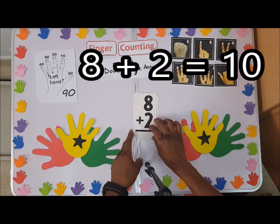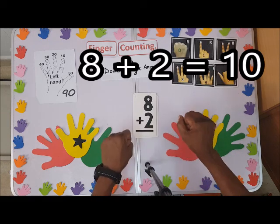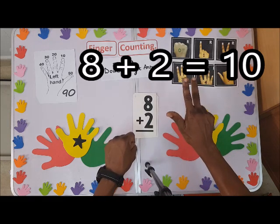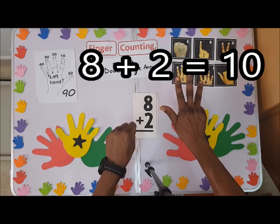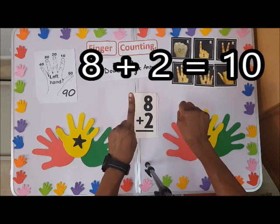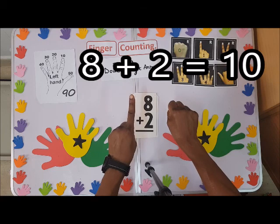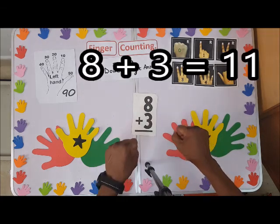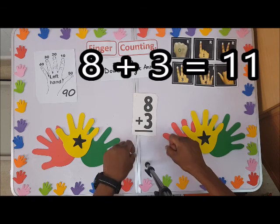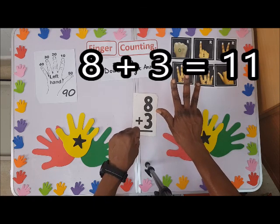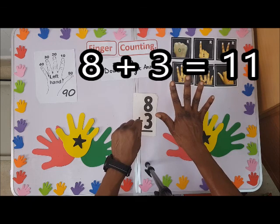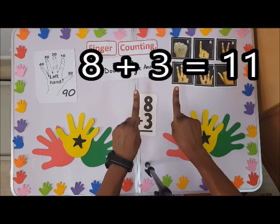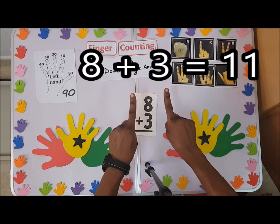Sixteen. We have eight plus three. We have eight plus three: one, two, three. The answer is what? Eleven. Eleven.